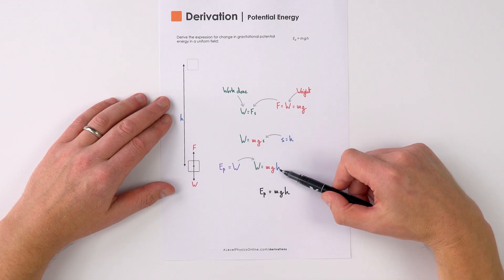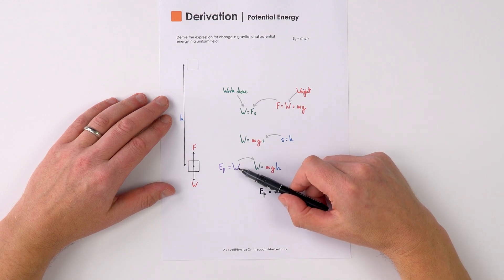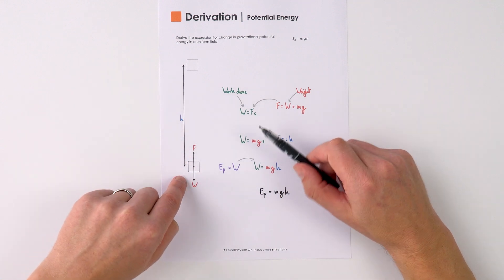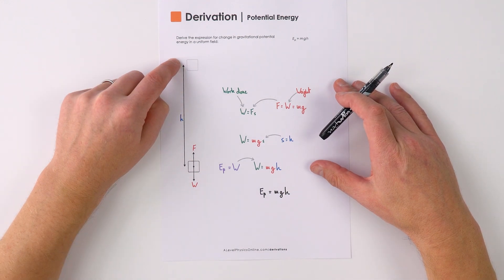So W equals mgh and this work done on the object causes its store of gravitational potential energy to increase.